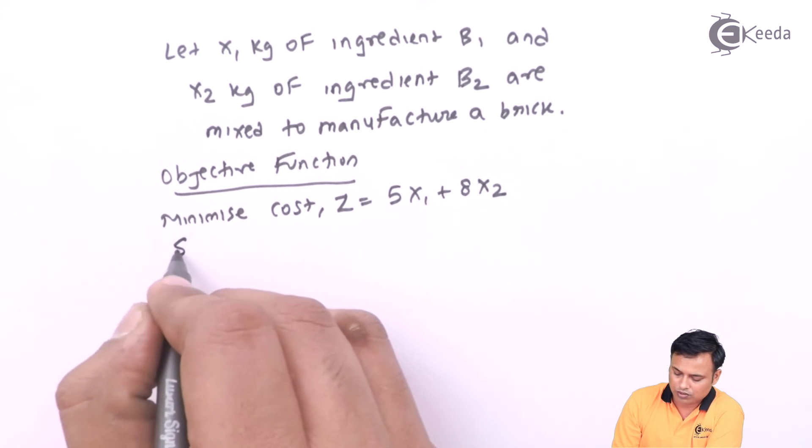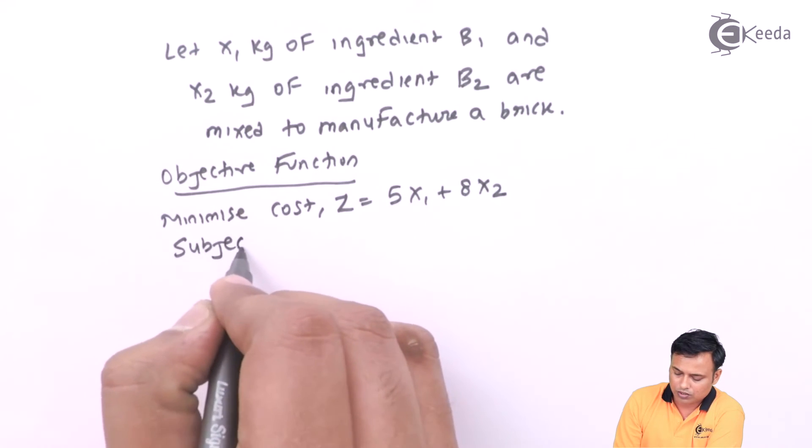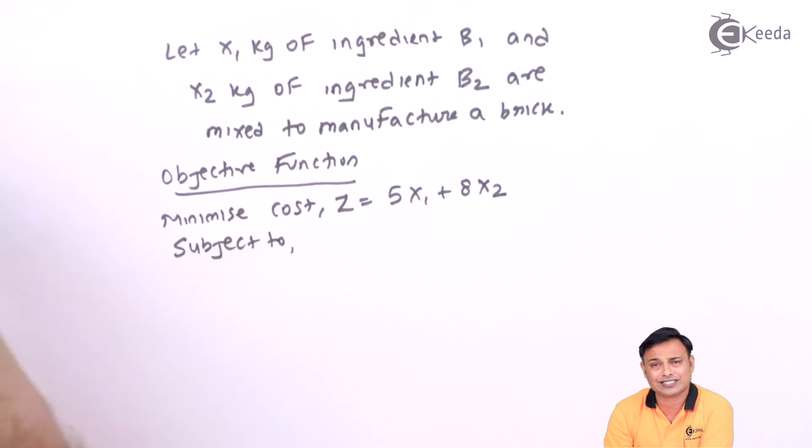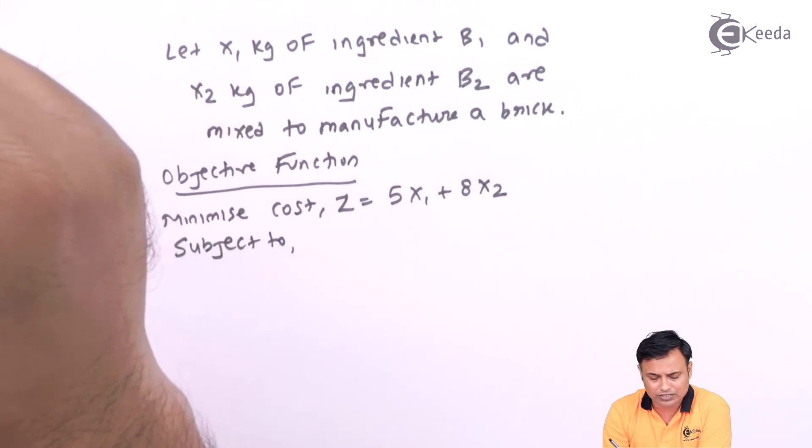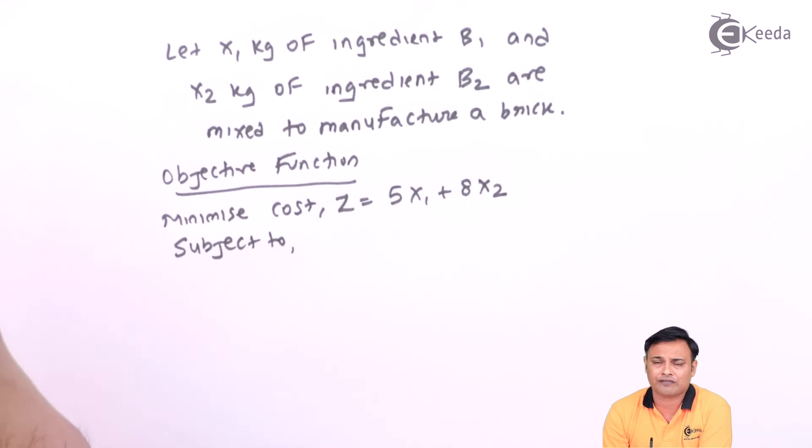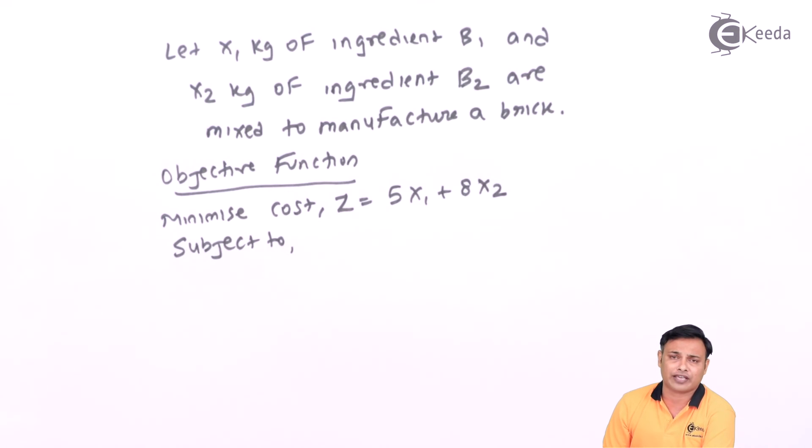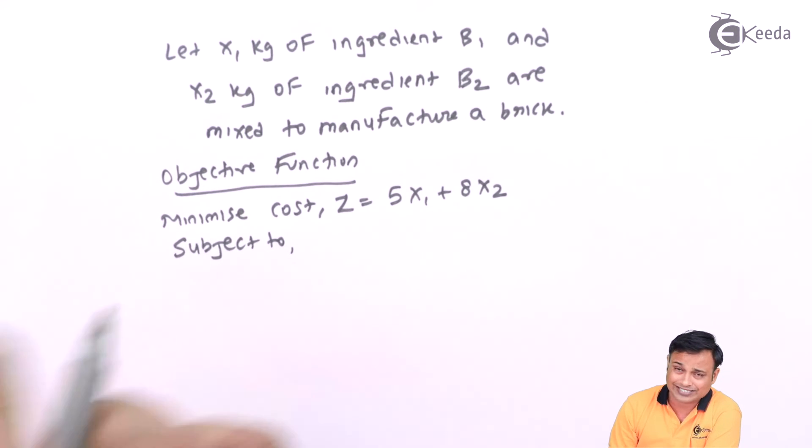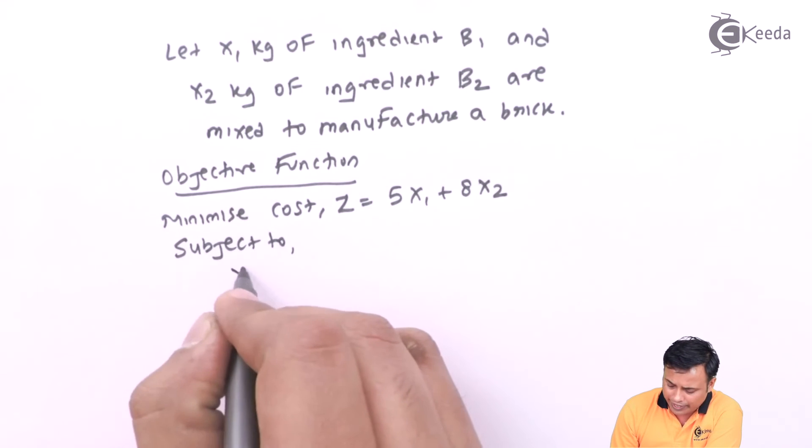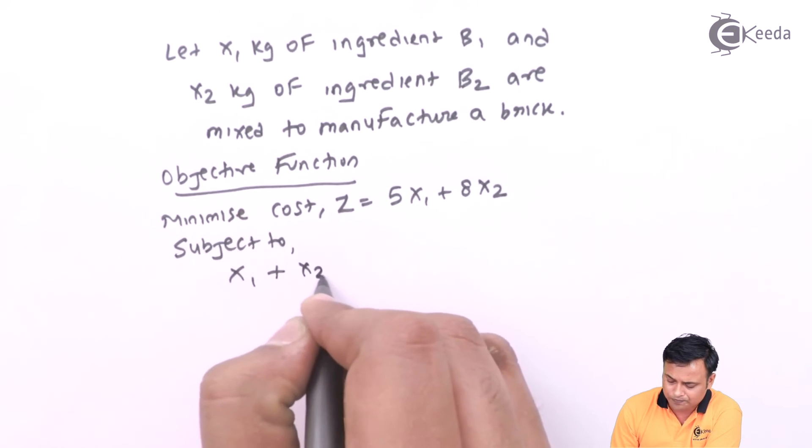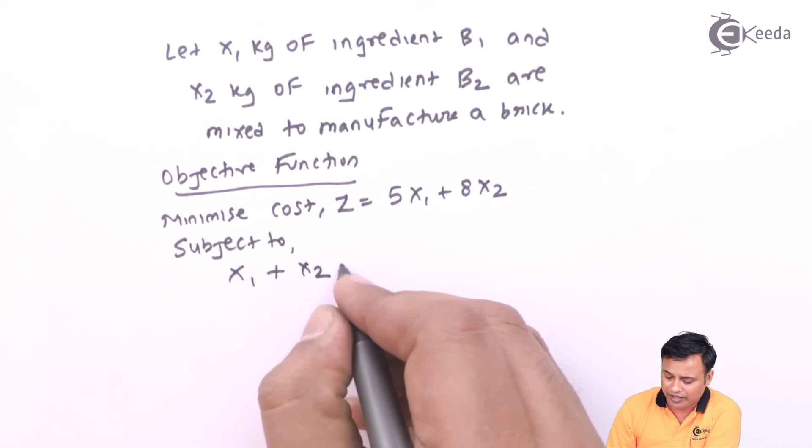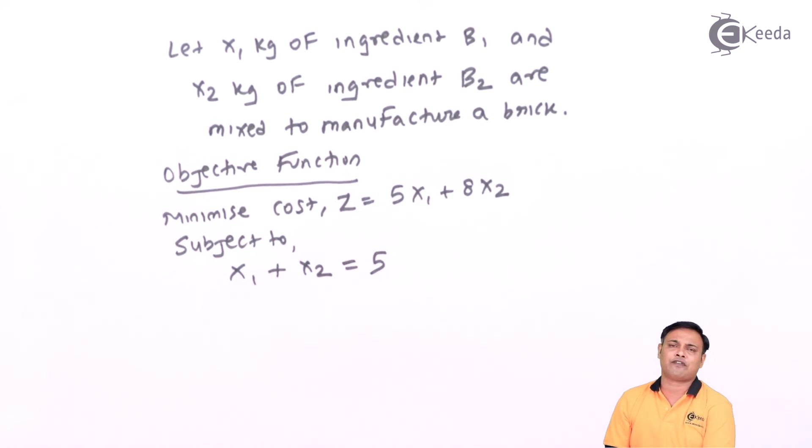Subject to what are my constraints now? My first constraint will be that the standard weight of the brick should be exactly equal to 5 kg. So it will be x1 plus x2 equals 5. It will not be less than 5, it will not be more than 5, it will be exactly equal to 5.